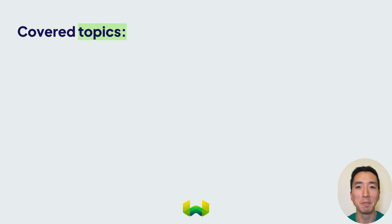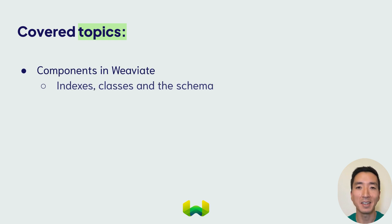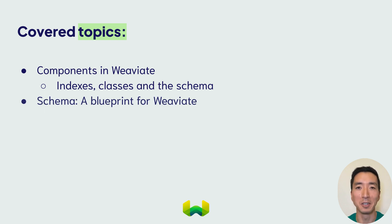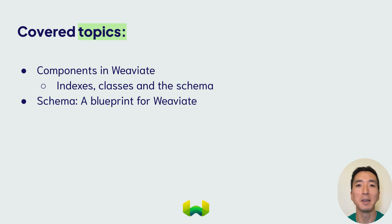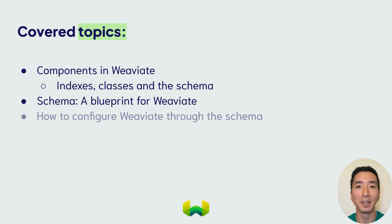In this unit, we'll begin by looking at various components in Weviate that are used to store data — that means indexes and classes, as well as the schema. Learning about schemas is really important because this is where you draw up a blueprint or a structure for how your instance of Weviate is going to store and retrieve data. Defining a schema that'll work for your data is a key step in being able to retrieve the right data objects in a way that suits you.